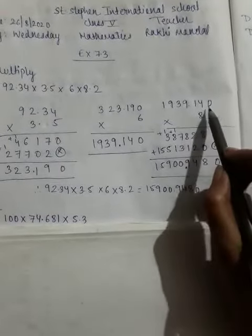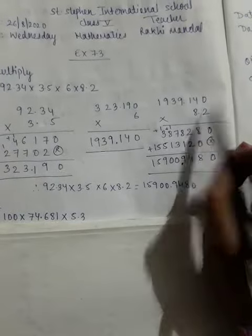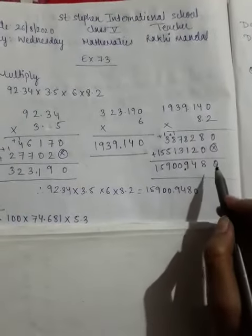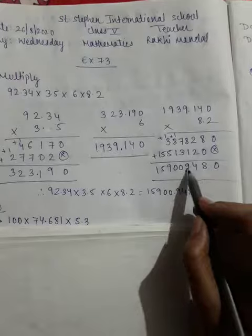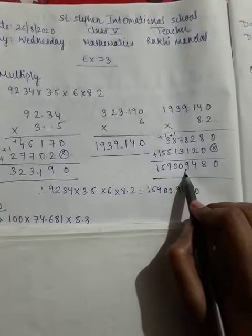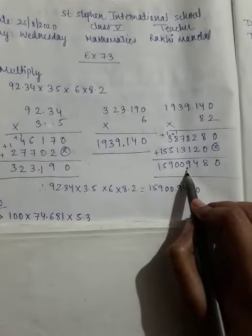So just count it: 1, 2, 3, 4, okay? Now the answer is 1, 2, 3, 4, we will put here, like this. Understood?